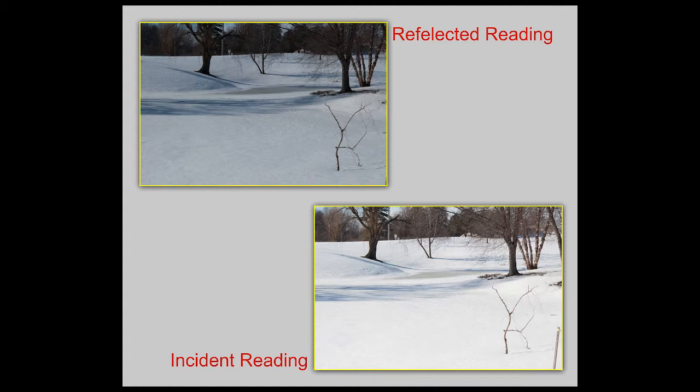Some other things to always remember when using that: unless you're doing a ratio reading, point the white bulb at the camera. Have the meter, whenever possible, right at the subject's face or at the place the subject is in a still life. Do not stand in the shadow of your light when taking the reading. Make sure that your ISO setting on your light meter matches the ISO setting you've set on your camera.